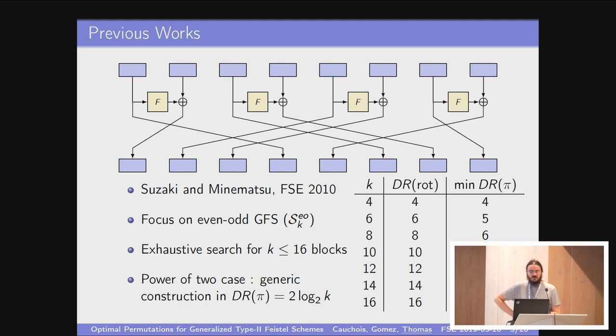There is a seminal paper on how to improve the diffusion of Feistel network, which was done by Suzaki and Minematsu and presented at FSE 2010. What was their main focus? Their idea was that the permutation you use has two kinds of blocks: blocks that are at the input of a function and blocks that are at the output. The blocks that help diffusion are the even ones and the odd ones play a less important role. So the heuristic would be that between two rounds, let's swap the roles of these two kinds of blocks. That's what we call even-odd general Feistel networks, where you send the even blocks to the odd blocks and vice versa.